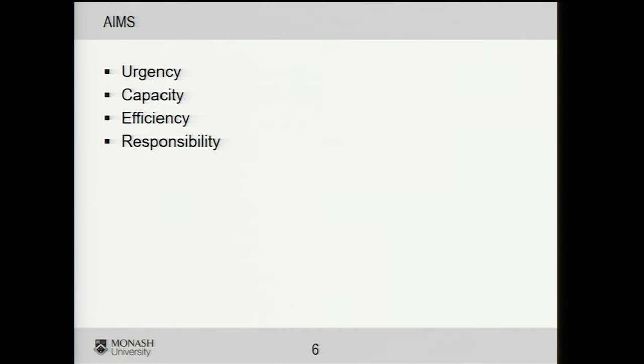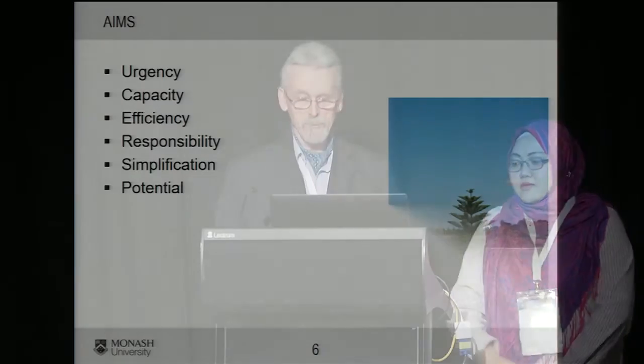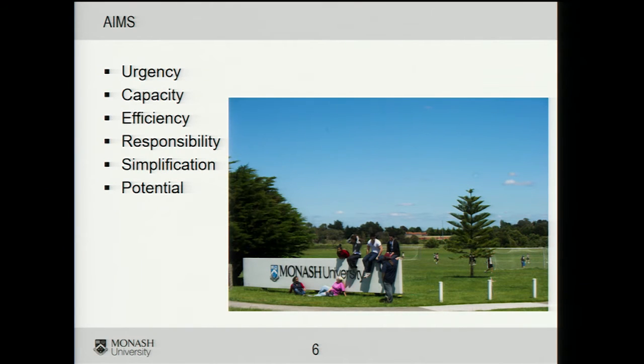I mean, they've come to us, they've told us their information — why should they then have to go throughout the university repeating themselves? Simplification: the advice to students can be a lot simpler and the process across all faculties is the same. There's also potential that with information being in faculty automatically, it enables the faculty to use it for other purposes — for example, students involved in academic progress proceedings, where it's important for the committee to know whether they're registered.